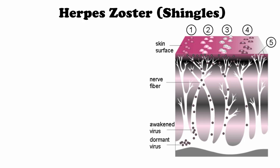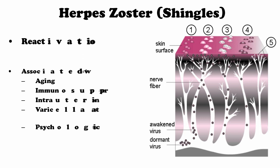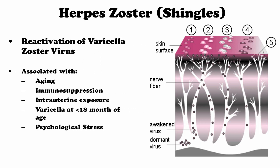Herpes Zoster or shingles is a recurrent infection of the virus, where the dormant virus kept in your body in the nerve ganglia is reactivated due to certain reasons and can travel through the nerve fiber to the skin, where it forms blisters or vesicles in a severe form. Reactivation of Varicella Zoster virus is associated with aging, immunosuppression, intrauterine exposure, varicella infection before 18 months of age, and psychological stress.